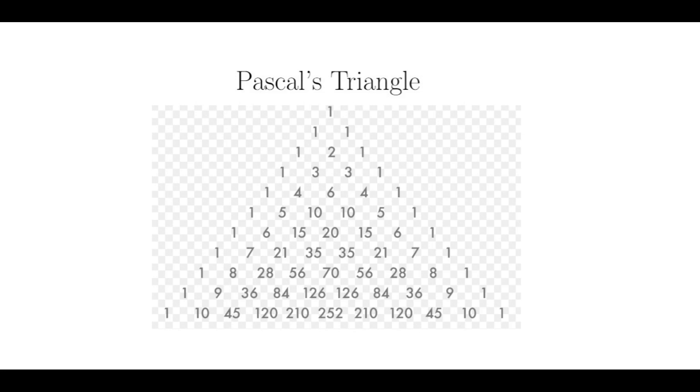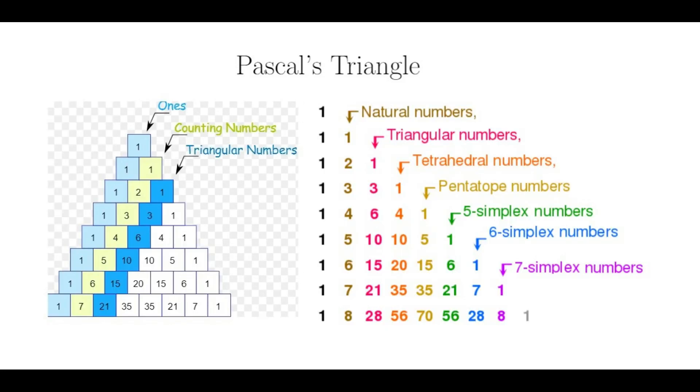However, if you were looking at the main diagonals, you'll notice something that I find quite interesting. I'm showing the triangle left justified, so it's easier to see the pattern I'm talking about. The first column is just ones. The second are the natural numbers, or counting numbers.